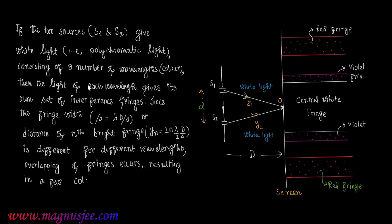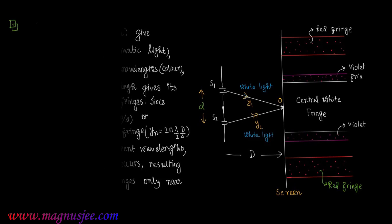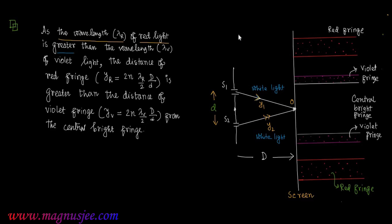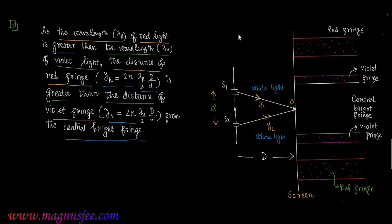This overlapping results in only a few colored fringes near the central white fringe. As the wavelength of red light is greater than the wavelength of violet light, the distance of the red fringe is greater than the distance of the violet fringe from the central white fringe.